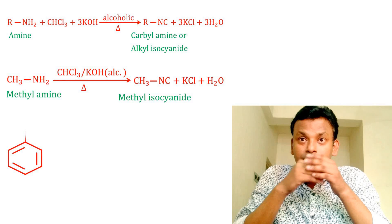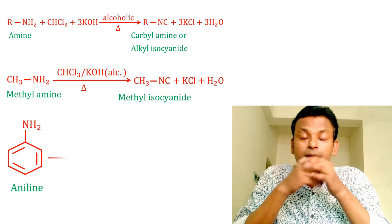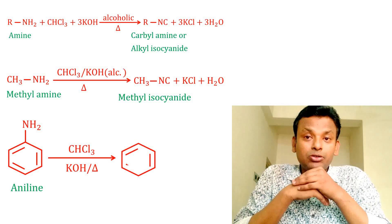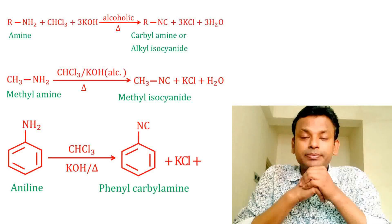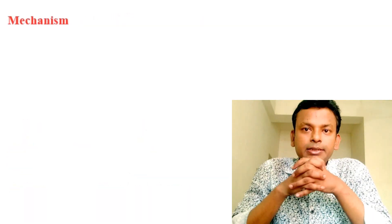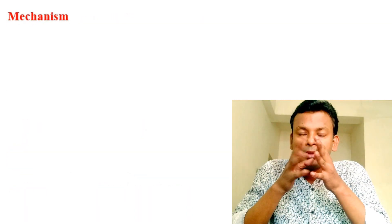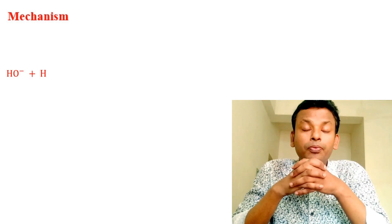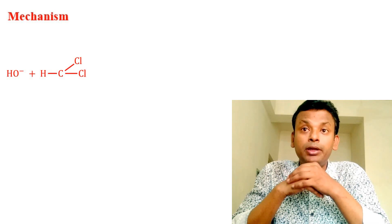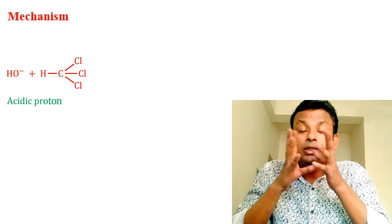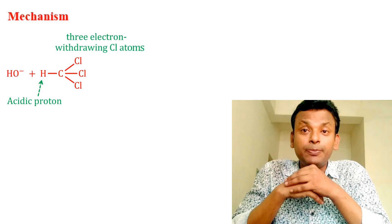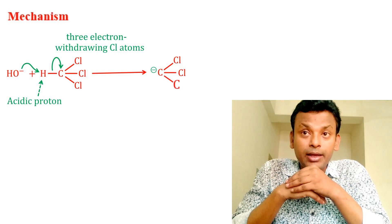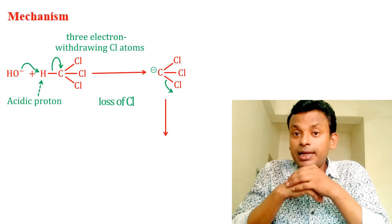Mechanism of the reaction: Here first, the base accepts the proton from chloroform. Chloroform has three electron-withdrawing chlorine atoms, so this hydrogen is acidic, that is the acidic proton. The base accepts this proton. From the carbanion, loss of Cl negative atom from carbon ion forms the carbene, that is dichlorocarbene.